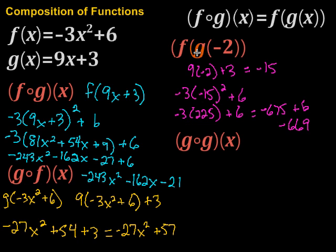So notice what we did there. Started by finding g of negative 2, inserting negative 2 in the g, finding what that was, get negative 15, then we took that and put it into the f function and found what we got from there.